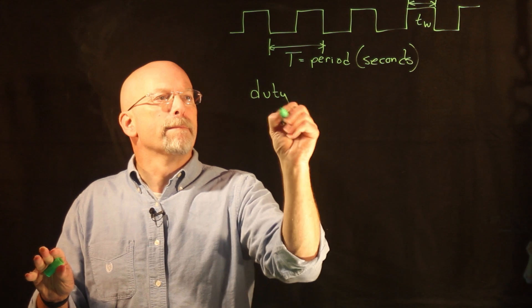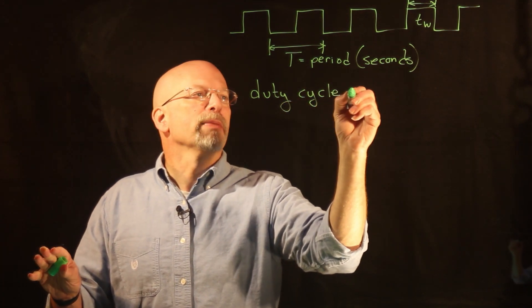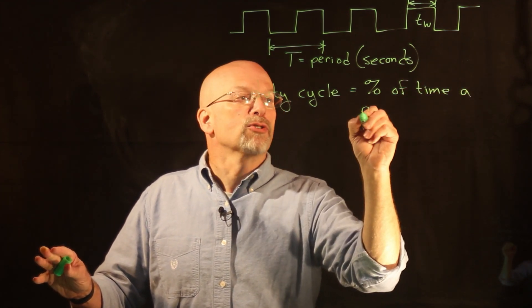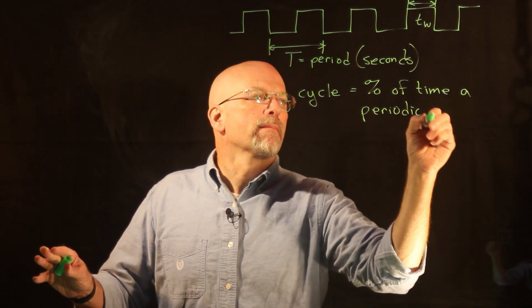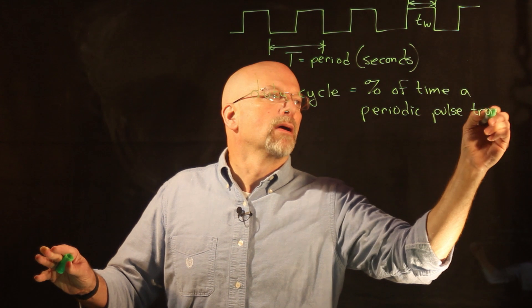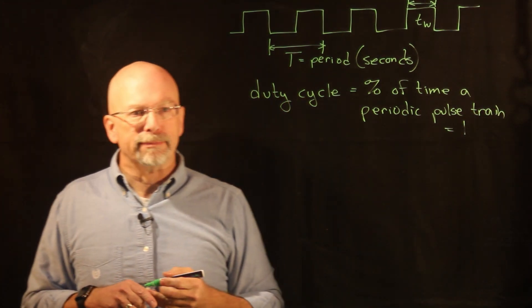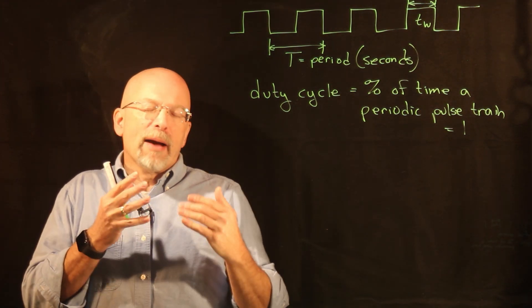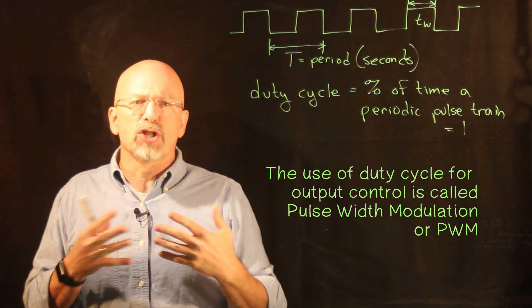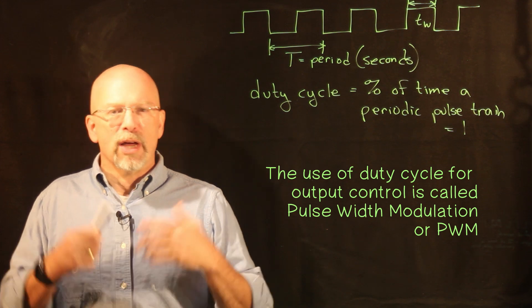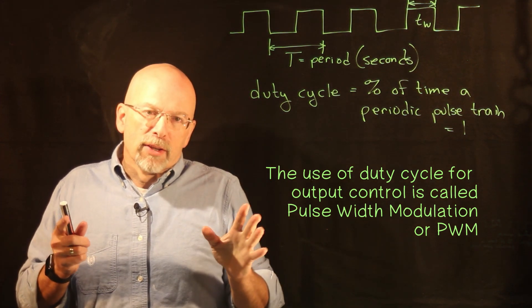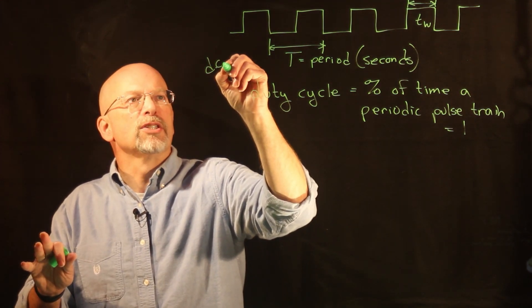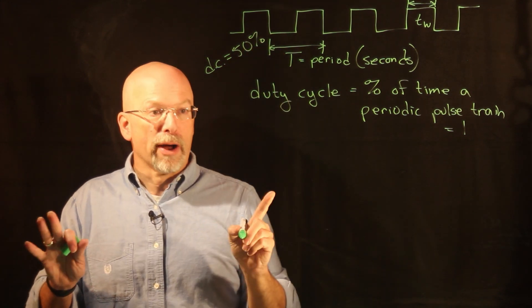This brings us to a term called duty cycle. A duty cycle is basically the percent of time a periodic pulse train equals one, a logic one. Another way engineers look at this is what percentage of the total possible power are we sending to this output. In this case we're a logic one 50% of the time, so we're sending about 50% of the power. We would say the duty cycle for this is 50%.